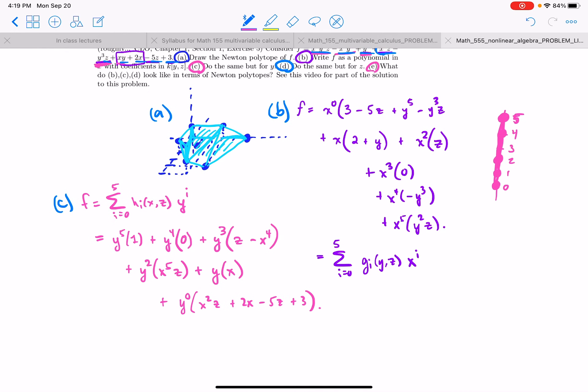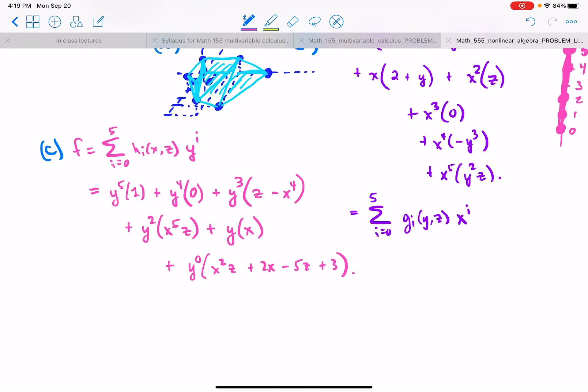Okay. And now the other Newton polytope in terms of y. Well, the y zero term occurred, all the way up to the y to the fifth term. So the Newton polytope is just going to be the line segment here. Okay.